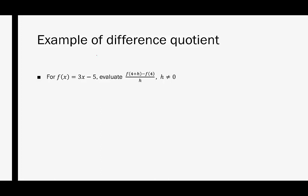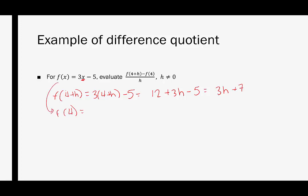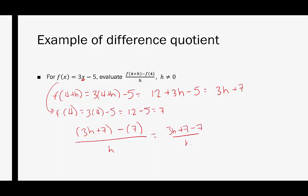Let's try this again, but this time we're going to actually plug in a number. Because this is linear and we already know the slope between any two points, we're expecting the answer to be 3. We're going to break up the numerator: f of 4 plus h means substituting 4 plus h, giving 3 times 4 plus h minus 5, which is 12 plus 3h minus 5, or 3h plus 7. Then f of 4 gives us 3 times 4 minus 5, which is 7. The difference quotient gives us 3h plus 7 minus 7, divided by h — that's 3h over h, which equals 3, as expected.